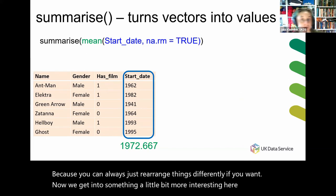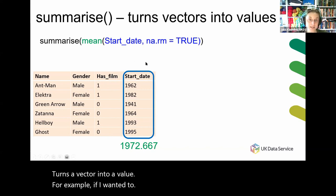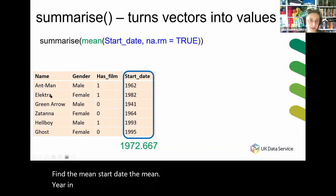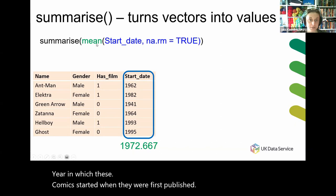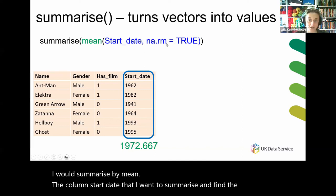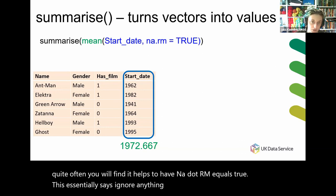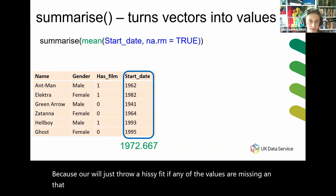Summarize turns a vector into a value. For example, if I wanted to find the mean start date — the mean year in which these comics were first published — I would summarize by mean on the start date column. Quite often it helps to include na.rm equals true, which essentially says ignore anything that has a missing value, because R will throw a fit if any values are missing.